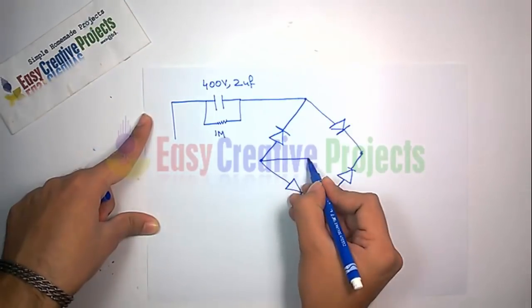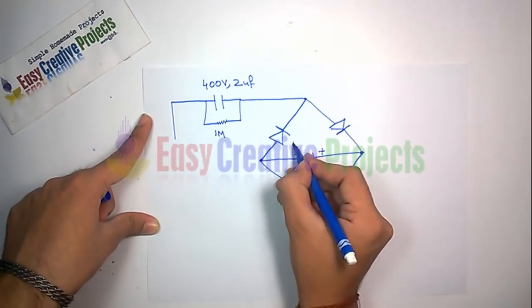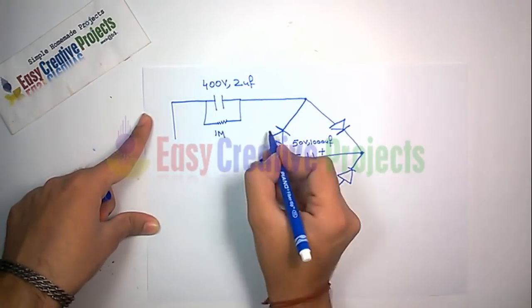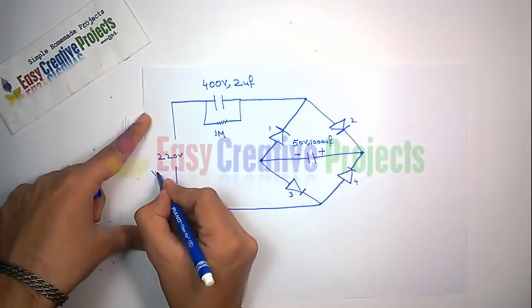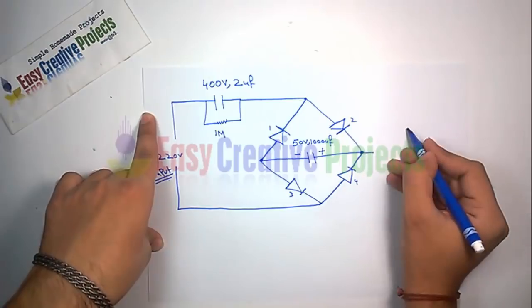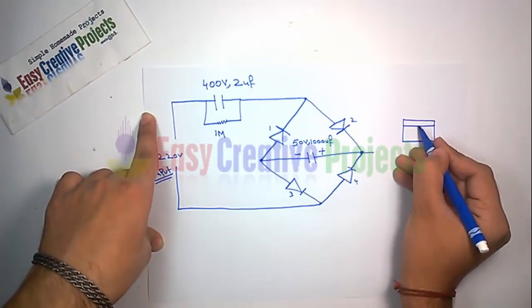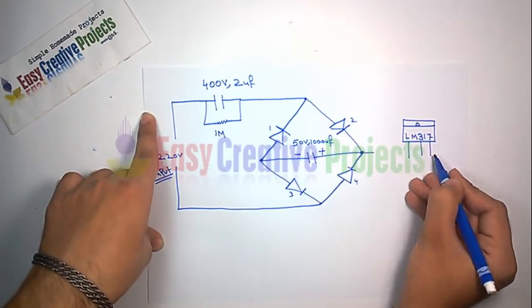Now connect 1000 microfarad capacitor. Now connect 100 ohm resistor with diode and third pin of LM317.